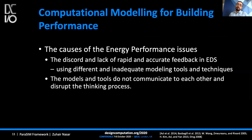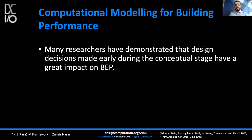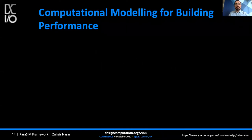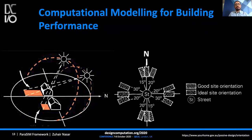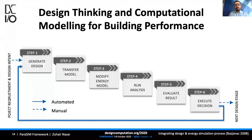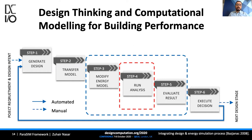Models and tools often don't communicate with each other, disturbing the thinking process. Many researchers say that design decisions made during the conceptual and early design stage have a great impact on building energy performance. For example, putting a building on the correct orientation without extra cost can reduce energy consumption by 30 to 40 percent.